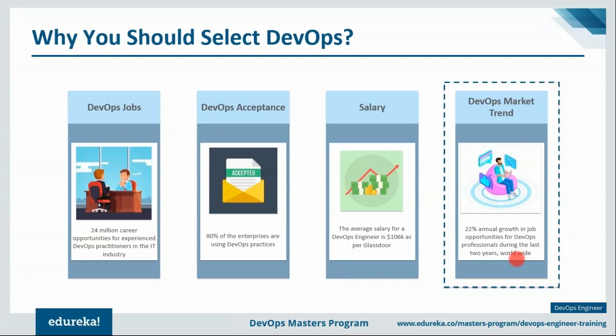To summarize what we've discussed: who is a DevOps engineer, what it takes to become a successful DevOps engineer, various DevOps skills, what industries are looking for in a DevOps professional through a Rackspace job description, the various job roles in DevOps, and the DevOps market trend showing 81% of enterprises and 70% of small to medium businesses using DevOps practices. To become a DevOps engineer you require a wide variety of skills — so how do you master all of them?